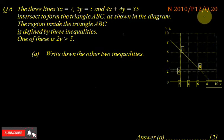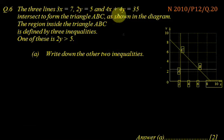Question number 20, paper 1, variant 2, November 2010. Three lines 3x equals 7, 2y equals 5, and 4x plus 4y equals 35 intersect to form the triangle ABC as shown in the diagram.